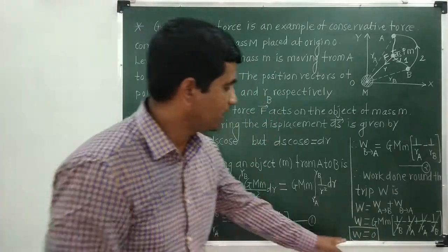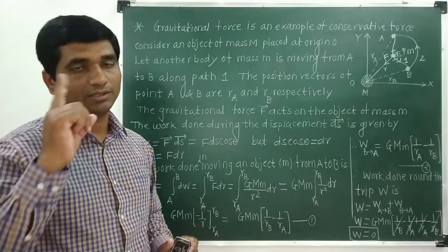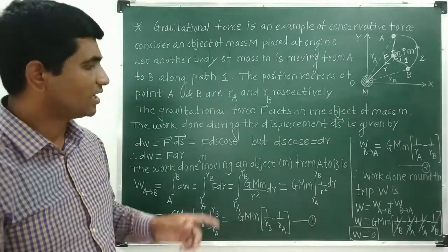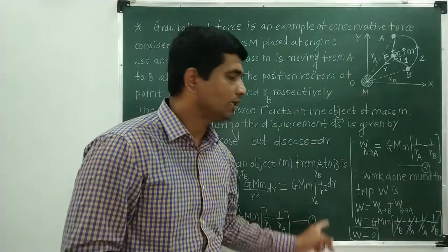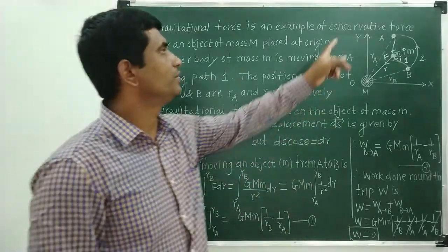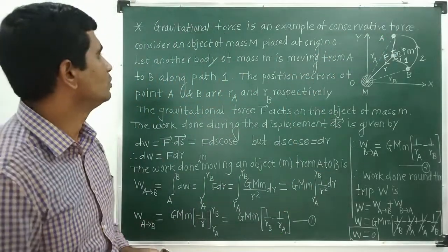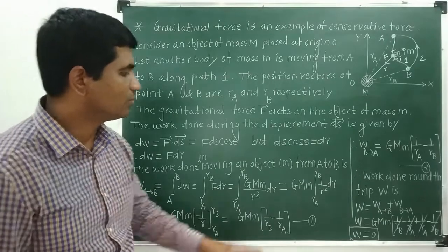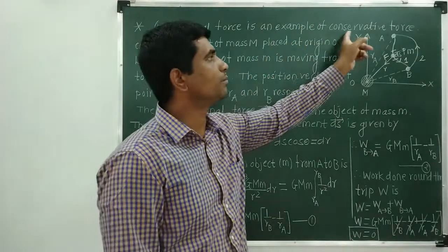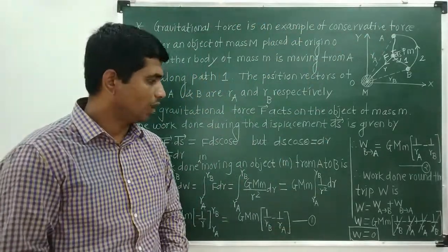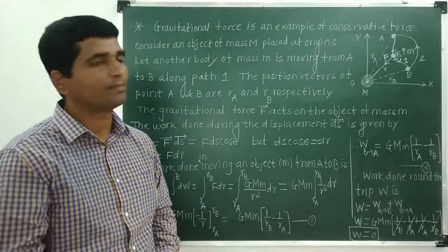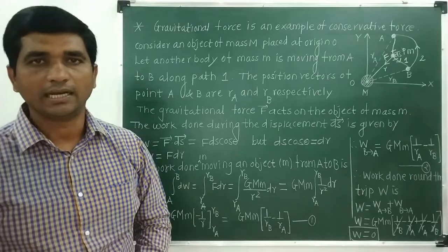The work done during the round trip is zero. Recalling our previous definition, whenever the work done during the round trip is zero, the corresponding force field is called a conservative force field. Therefore, as the work done during the round trip is zero, gravitational force is an example of a conservative force. We will cover an example of a non-conservative force in the next lecture. Thank you.